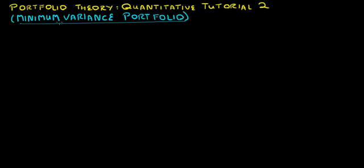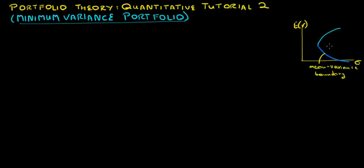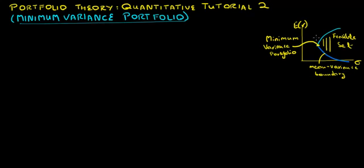In the first tutorial on portfolio theory, we learned how to find a unique solution to Markowitz's portfolio optimization problem given a portfolio's expected return. If we were to plot a feasible set of portfolios in mean-variance space, it would look as follows. This curve, representing portfolios with different levels of expected return and volatility, is called the mean-variance boundary. The area inside this boundary is called the feasible set. The point on the mean-variance boundary with minimum volatility is the minimum variance portfolio, and the part above it is called the efficient frontier — representing portfolios with higher expected return for a given level of risk than any other portfolio inside the feasible set.